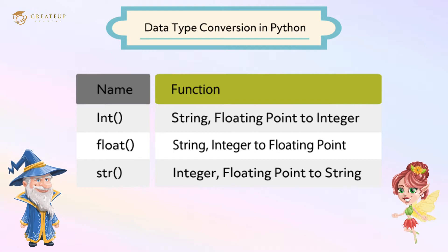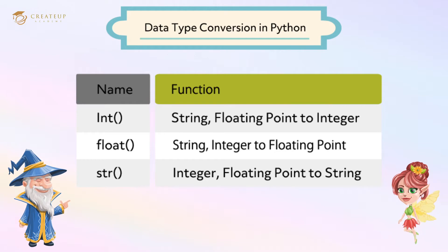What types of commands are available to convert data? The int() function converts a string to an integer. The float() function converts a string to a floating point number. The str() function converts an integer or floating point number to a string. We can use these commands to convert the data.